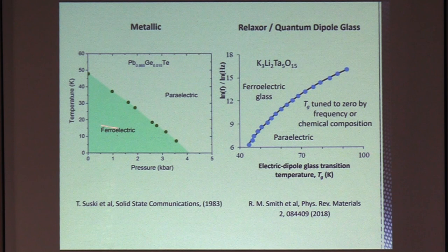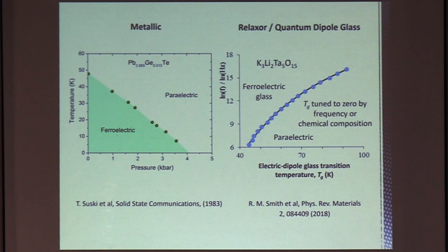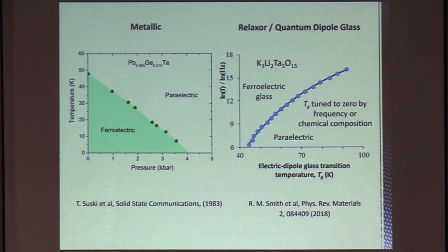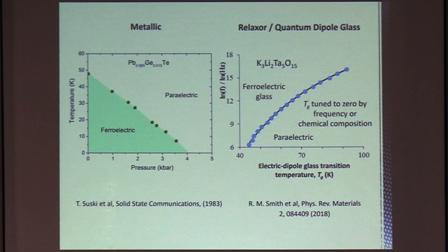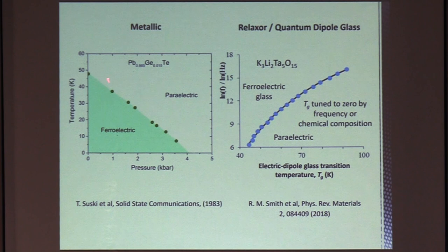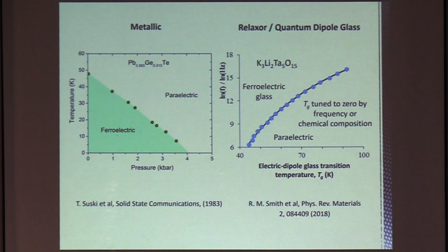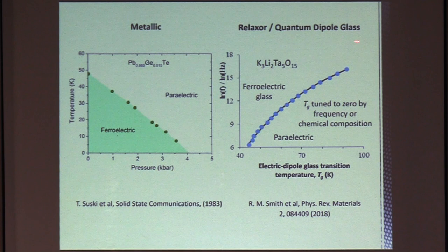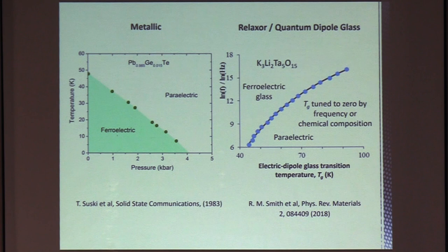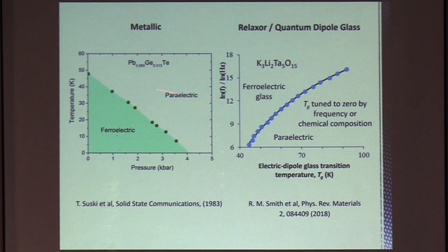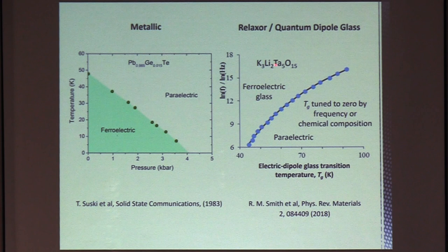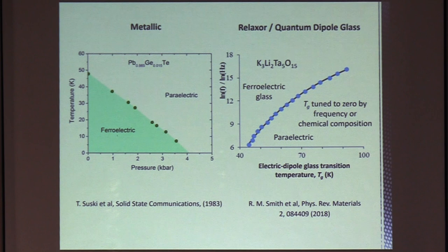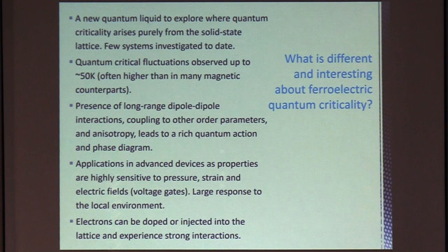It's also possible to have so-called metallic ferroelectrics. And by this, we just mean that the electron carrier density is too small to completely screen the dipole in the unit cell. So you wouldn't be able to measure a macroscopic polarization, but inside the lattice there are still dipoles. In this case, pressure again is tuning this metallic ferroelectric down towards absolute zero. And then finally, there's the case of a so-called quantum dipole glass or relaxor material, where it's not an equilibrium phase transition, but there are a glass-type transition, which is highly frequency-dependent. And by tuning the frequency or chemical composition, you can also tune the glass transition temperature towards zero.